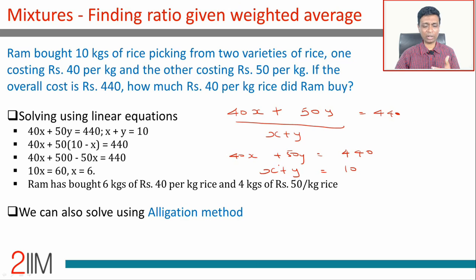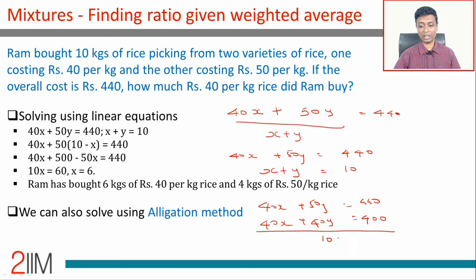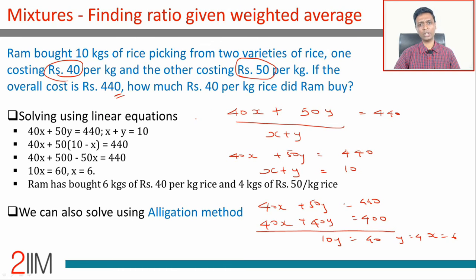It's a very standardized template in this topic on mixtures: given two quantities being mixed and knowing the average, find in what ratio they have been mixed. Solving: 40x + 50y = 440 and x + y = 10. Multiply the second equation by 40: 40x + 40y = 400. Subtracting gives 10y = 40, so y = 4 and x = 6. You bought 6 kilograms at ₹40 and 4 kilograms at ₹50.